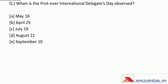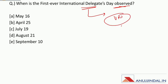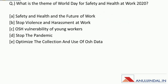When was the first-ever International Delegates Day observed? This first-ever International Delegates Day was observed by the United Nations on 25th April. What is the theme of World Day for Safety and Health at Work 2020? This year the theme was 'Stop the Pandemic.'